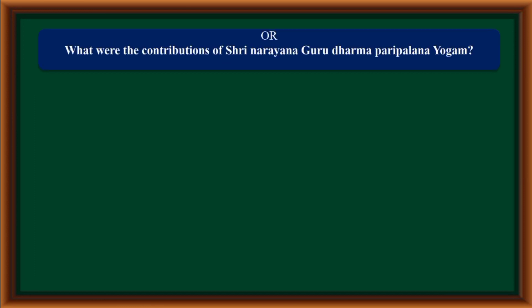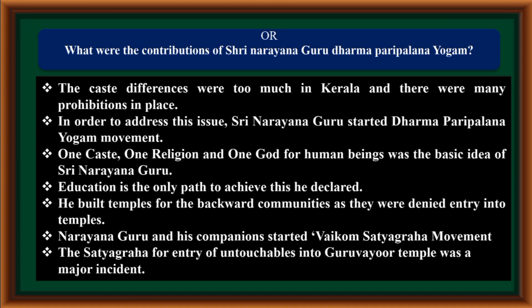What were the contributions of Sri Narayana Guru — Dharma Paripalana Yoga? Caste differences were too prominent in Kerala with many prohibitions. Sri Narayana Guru started the Dharma Paripalana Yoga movement to address this. His basic idea was: one caste, one religion, and one God for human beings. Education is the only path to achieve this, he declared. He built temples for backward communities denied entry elsewhere. Narayana Guru and his companions started the Vaikam Satyagraha movement. The satyagraha for entry of untouchables into the Guruvayur temple was a major incident.